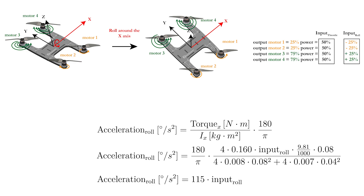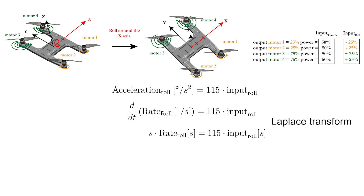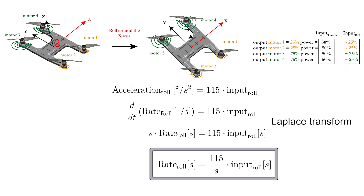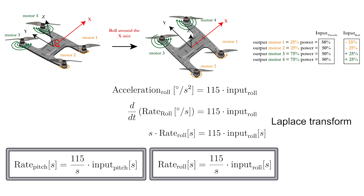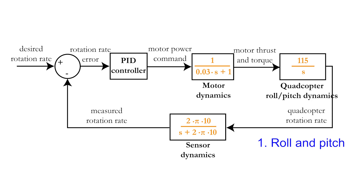Implementing both equations allows us to describe the acceleration in the roll direction explicitly — it only depends on the roll input given to the motors, which needs to be multiplied by 115. The acceleration in the roll direction can be transformed to the rotation rate in the roll direction by conceiving it to be the derivative of the acceleration. As seen in part 1, you can now easily perform a Laplace transform, giving you the transfer function for the roll dynamics of your drone in the frequency domain. Because the quadcopter is almost perfectly symmetric, the transfer function of the pitch movement can be considered to be the same as for the roll movement, resulting in two identical transfer functions. Going back to our control loop, we can now implement the transfer function for the roll and pitch movement, which is surprisingly simple.